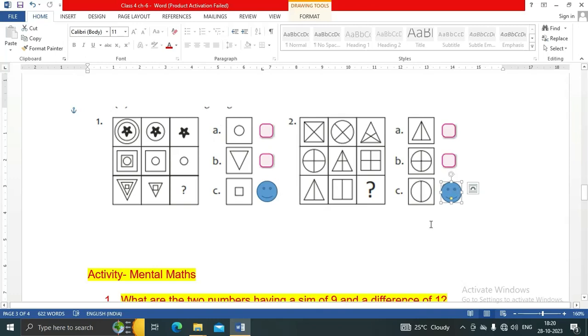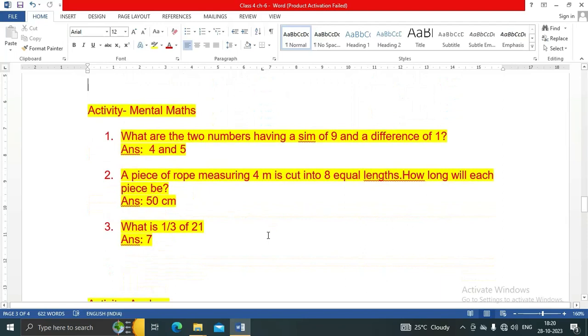Mental Maths: What are two numbers having a sum of 9 and difference of 1? The answer is 4 and 5. A piece of rope measuring 4 meters is cut into 8 equal lengths. How long will each piece be? 50 centimeters. What is one-third of 21? It is 7.